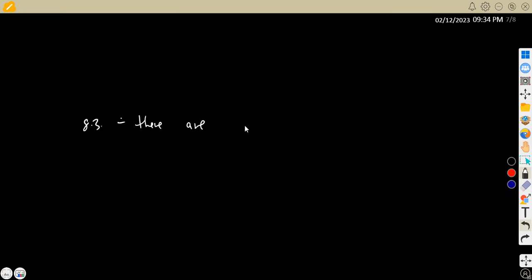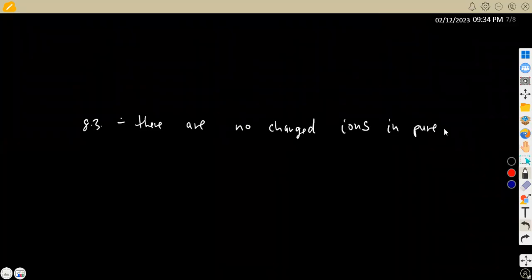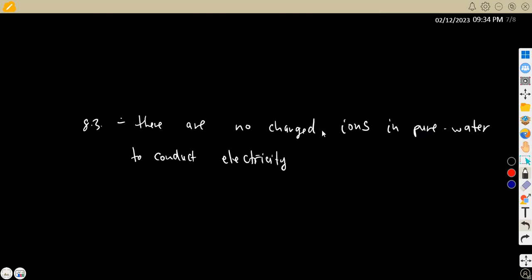So we are saying that 8.3, so pure water, for it not to charge, it's because we do not have charged ions. So we are going to say here, there are no charged ions in pure water. So if we are dealing with pure water, we do not have charged ions to conduct electricity. Therefore, pure water does not conduct electricity, which means pure water is a good insulator. Remember, an insulator is something that does not conduct electricity. So that's what we're supposed to have on 8.3.